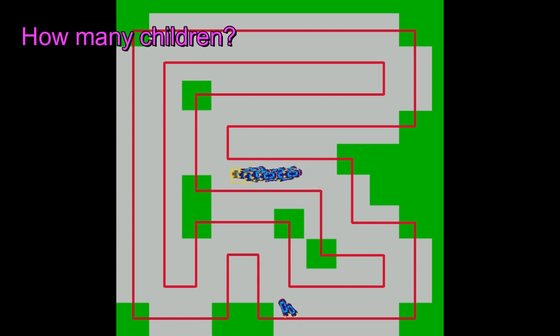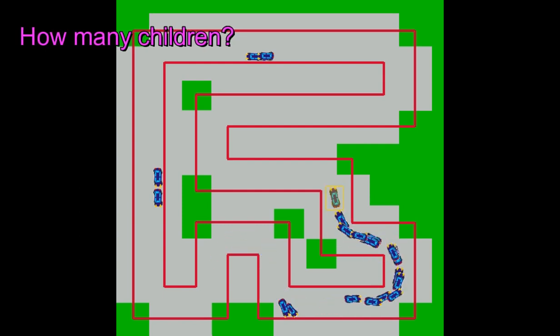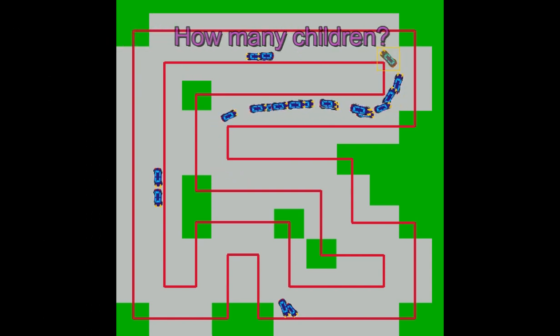Since the number of children determines how many mutated neural networks are tested, it is obvious that the increase in this number will also increase the likelihood to find a better solution. However, doubling the number of children also doubles the computational cost. Hence, we are forced to make a trade-off.